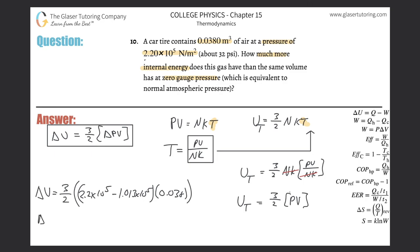And voila, we are done. All we have to do is plug it in. So this is going to work out to 3 over 2 times, parentheses, 2.2 times 10 to the fifth minus 1.013 times 10 to the fifth, and then that difference multiplied by 0.038. And the units are all right and everything looks good. So this is going to be about 6.77 times 10 to the third, and that's in terms of joules.